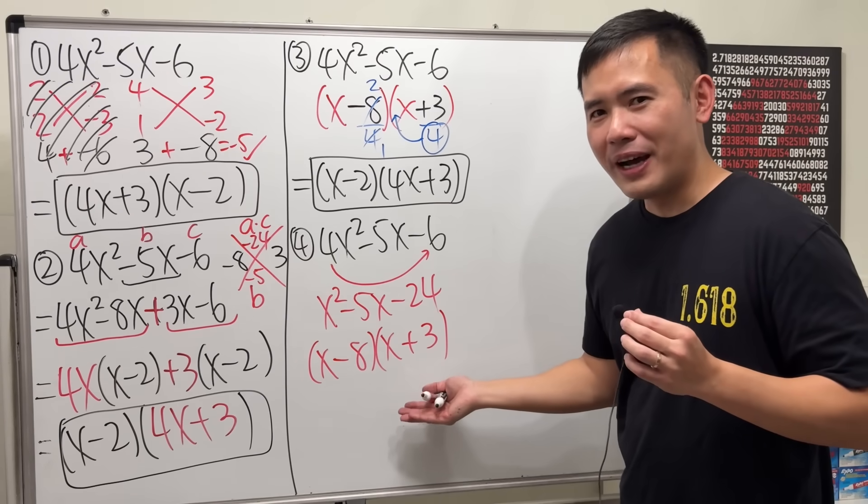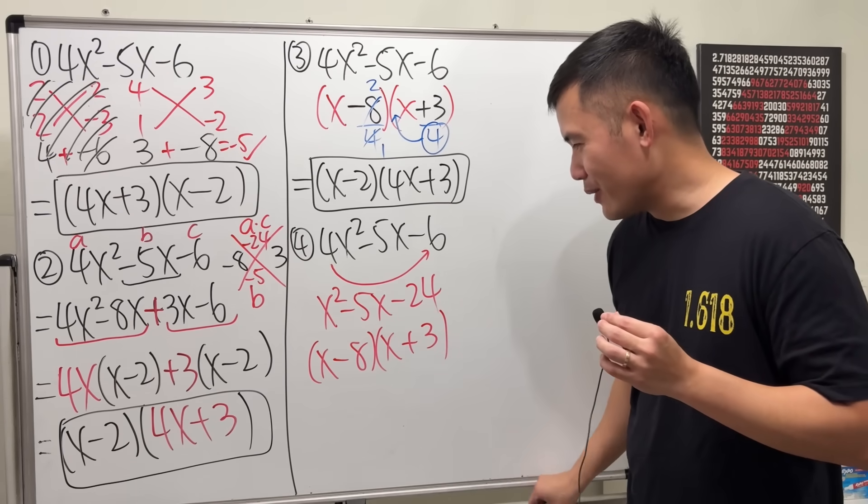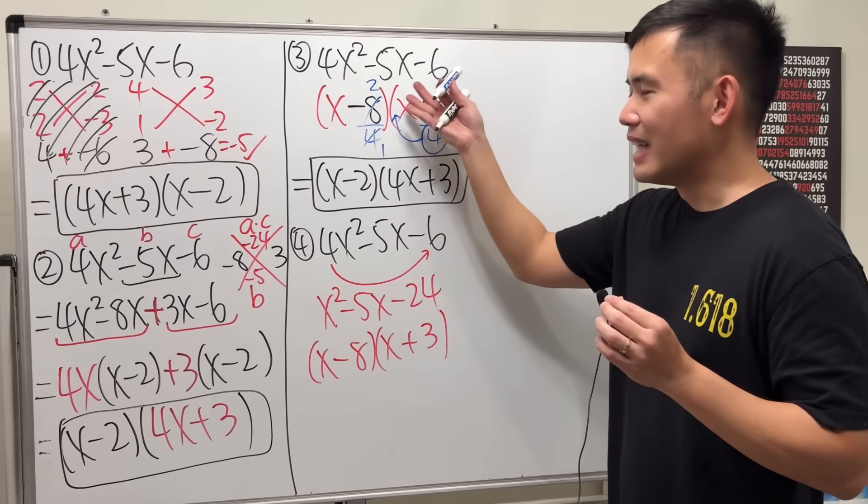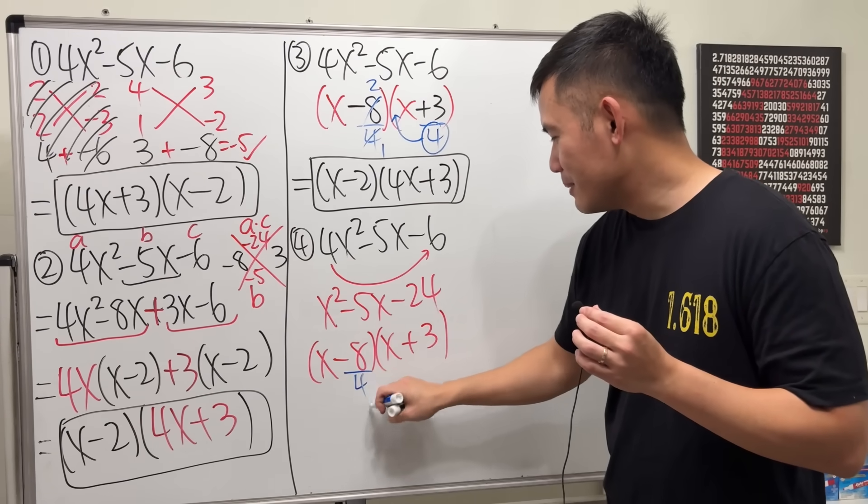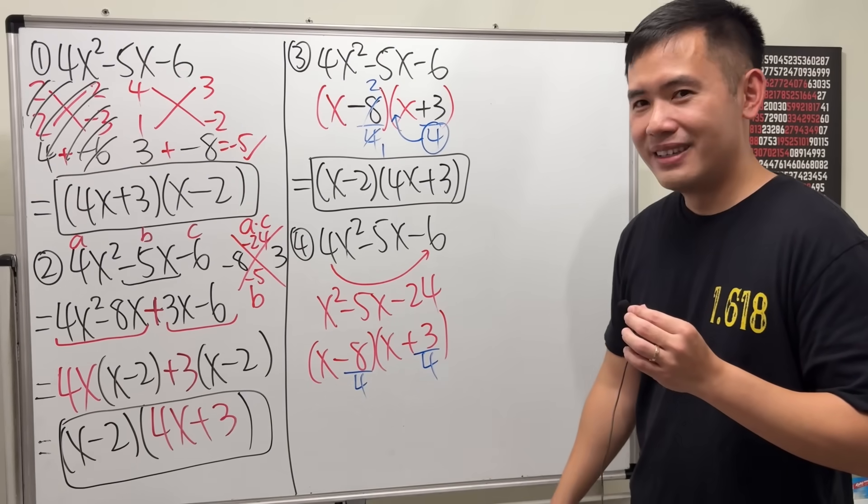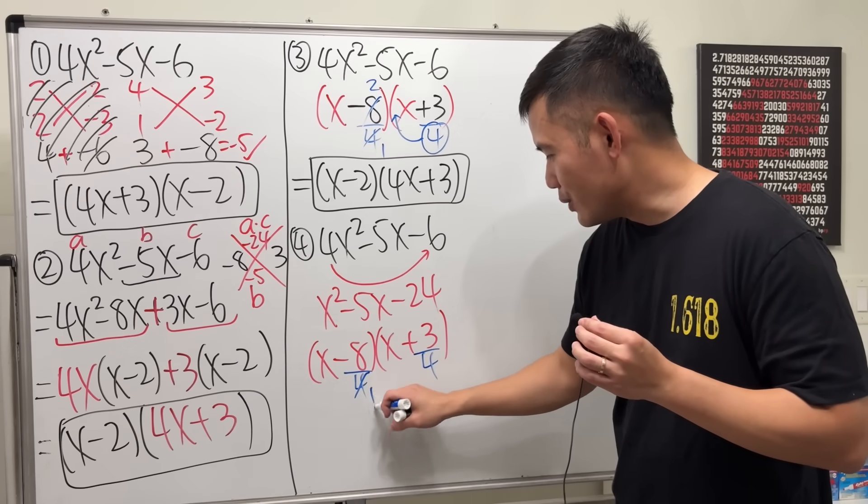Now, where is the 4, right? Didn't we ask that question like a while ago. Yes. Now, we do exactly the same thing right here. Look at this. Divided by the 4. And look at this. And divided by 4. Can we reduce? Yes. Then do it.